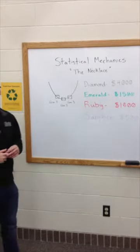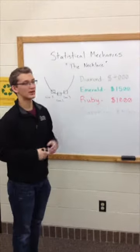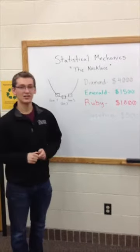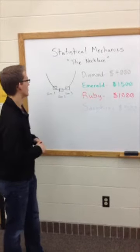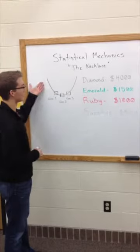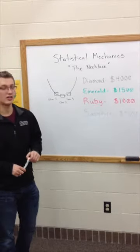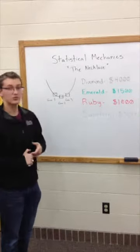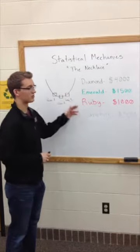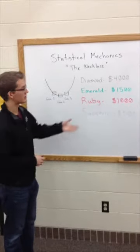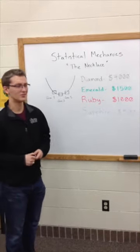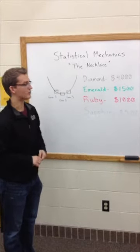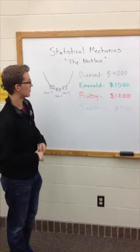To outline the problem, we're going to cover the whole basis of statistical mechanics. The problem is based on a necklace with three gemstones, and each spot will be filled. Our choices for gems are diamonds, emeralds, rubies, and sapphires. I looked up some average prices online from IsraelDiamonds.com and rounded them off a bit for ease of use in the problem.